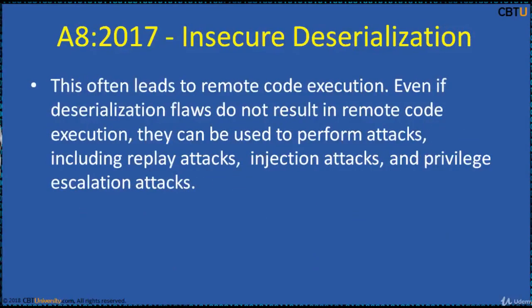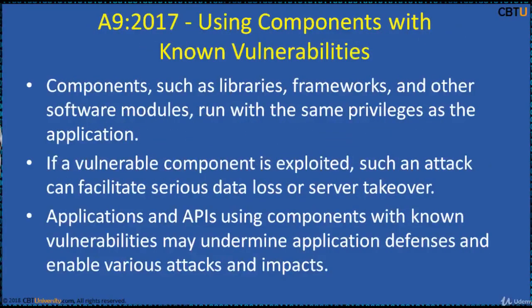Insecure Deserialization often leads to remote code execution. Even if deserialization flaws do not result in remote code execution, they can be used to perform attacks including replay attacks, injection attacks, and privilege escalation attacks. Using Components with Known Vulnerabilities: Components such as libraries, frameworks, and other software modules run with the same privileges as the application. If a vulnerable component is exploited, such an attack can facilitate serious data loss or server takeover. Applications and APIs using components with known vulnerabilities may undermine application defenses and enable various attacks.